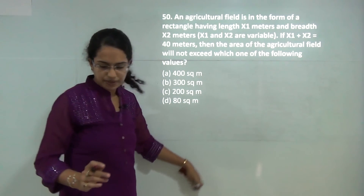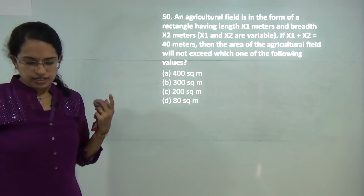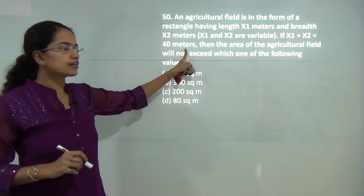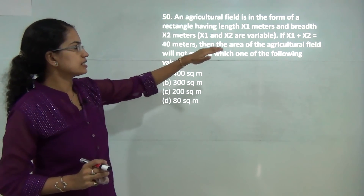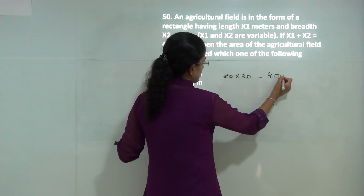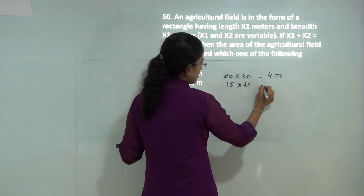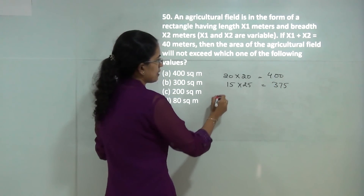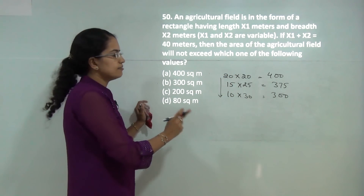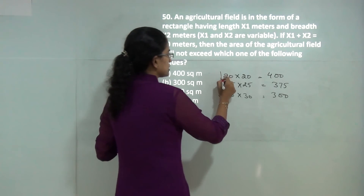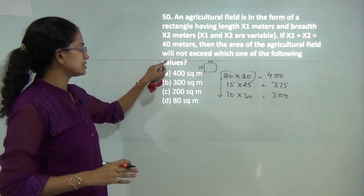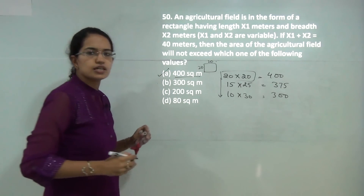The final question applies a simple theorem: when the perimeter is the same, the maximum area is that of a square. With perimeter giving x1 plus x2 equal to 40, if both are 20 the area is 400. If 15 and 25, the area is 375. If 10 and 30, the area is 300. So the area decreases as length and breadth diverge. A square of 20 by 20 gives maximum area, so the area will not exceed 400 square meters. A is the correct answer.